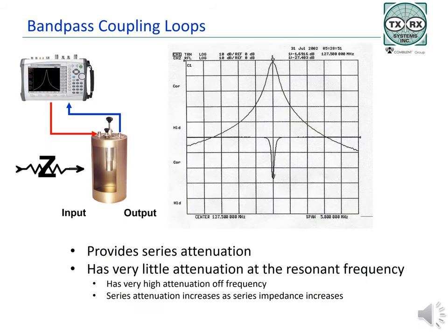Bandpass filters are characterized by steep skirts on either side of a center frequency. Bandwidth is normally a few hundred kilohertz, but this depends on the Q or quality factor of the filter, which is determined both by the physical size and construction of the cavity. The larger the cavity, the lower the insertion loss and the better the isolation. The trade-off is that larger cavities cost more and take up more space. Insertion loss will depend on the Q of the filter and may vary from a few tenths of a dB to several dB.